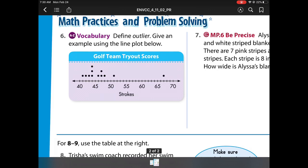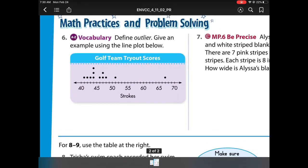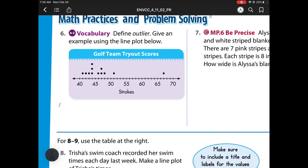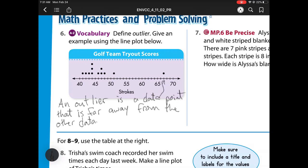Define outlier. Give an example. Use the line plot below. So remember, an outlier is a data point that is far away from the other data. And what's my example here? This one right there is my example. And that is 67. 67 is an outlier. And the reason why is notice how far away it is from all of my other dots.